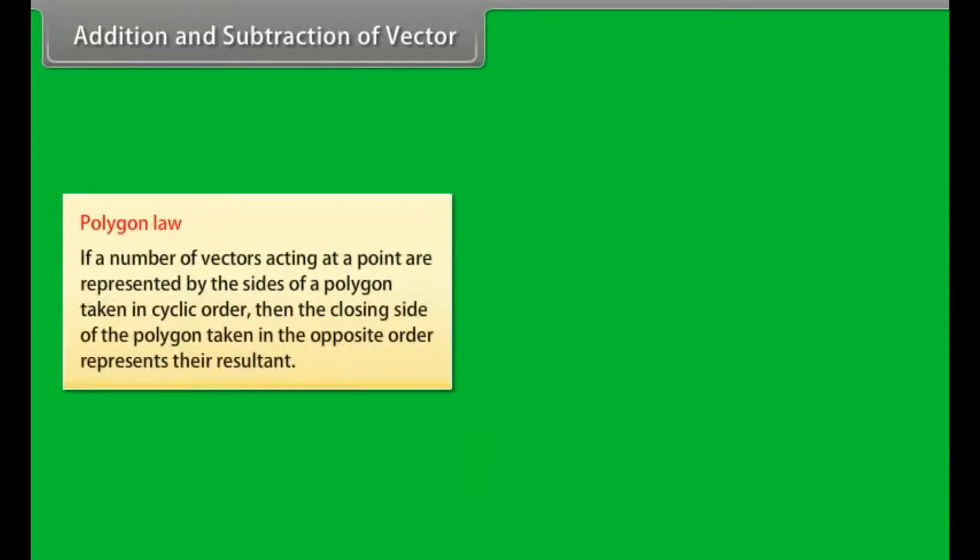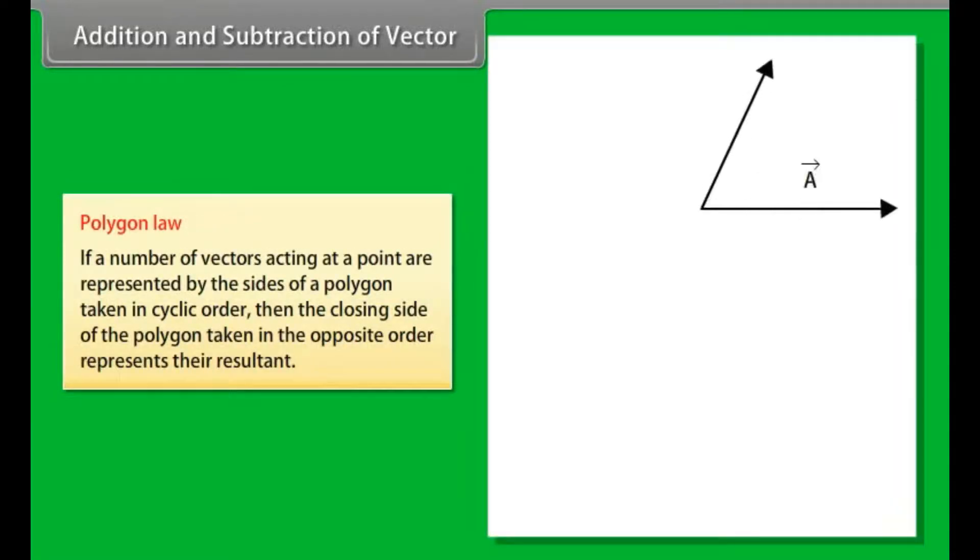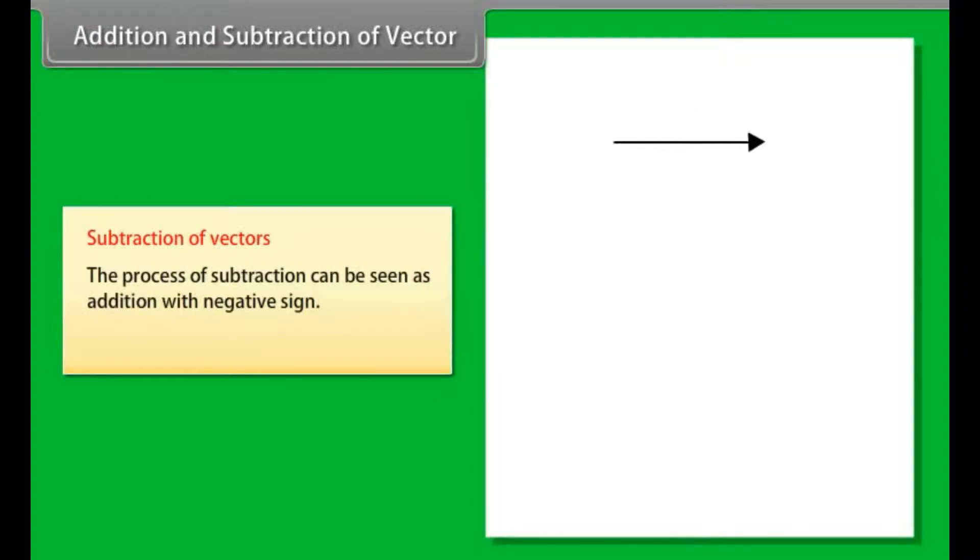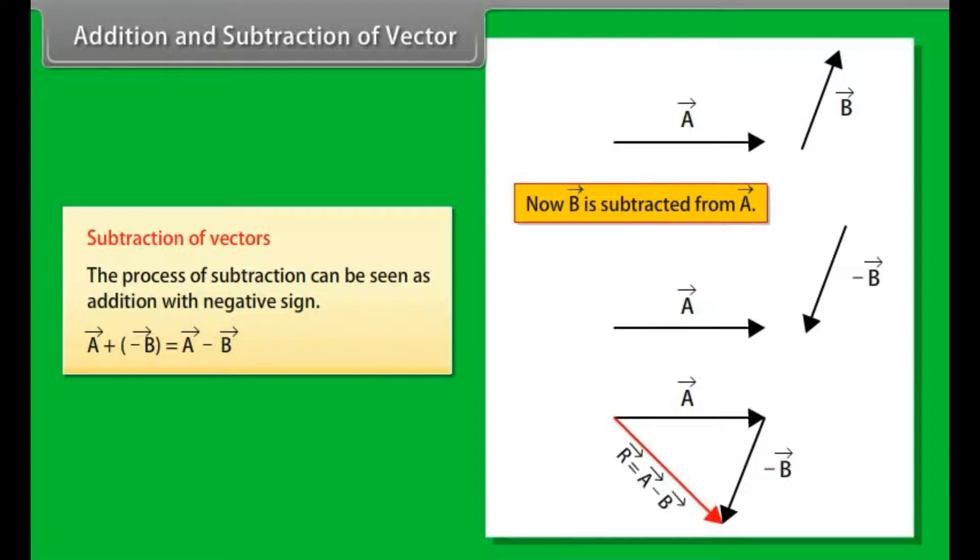C. Polygon law: If a number of vectors acting at a point are represented by the sides of a polygon taken in cyclic order, then the closing side of the polygon taken in the opposite order represents their resultant. Subtraction of vectors: The process of subtraction can be seen as addition with negative sign.